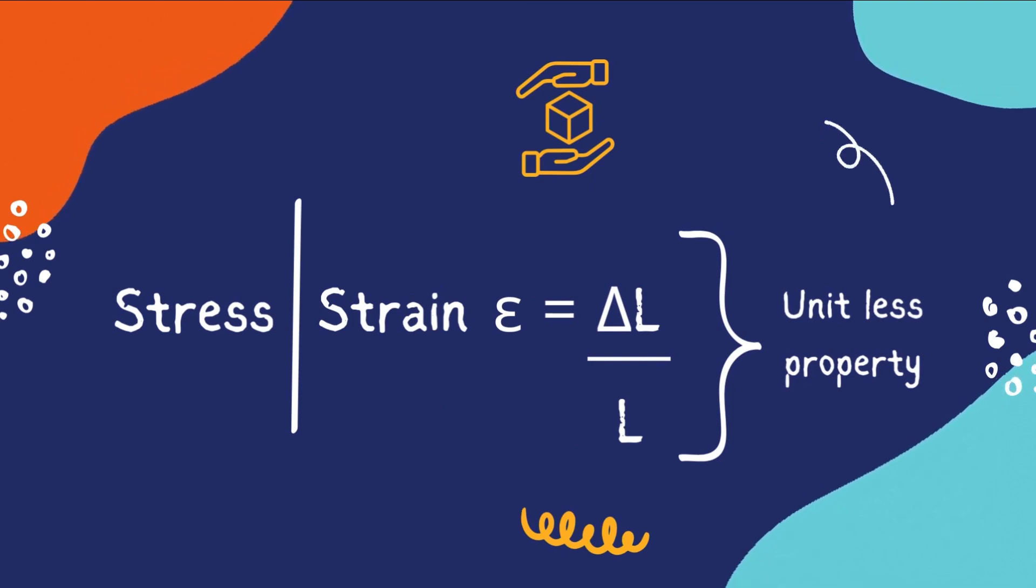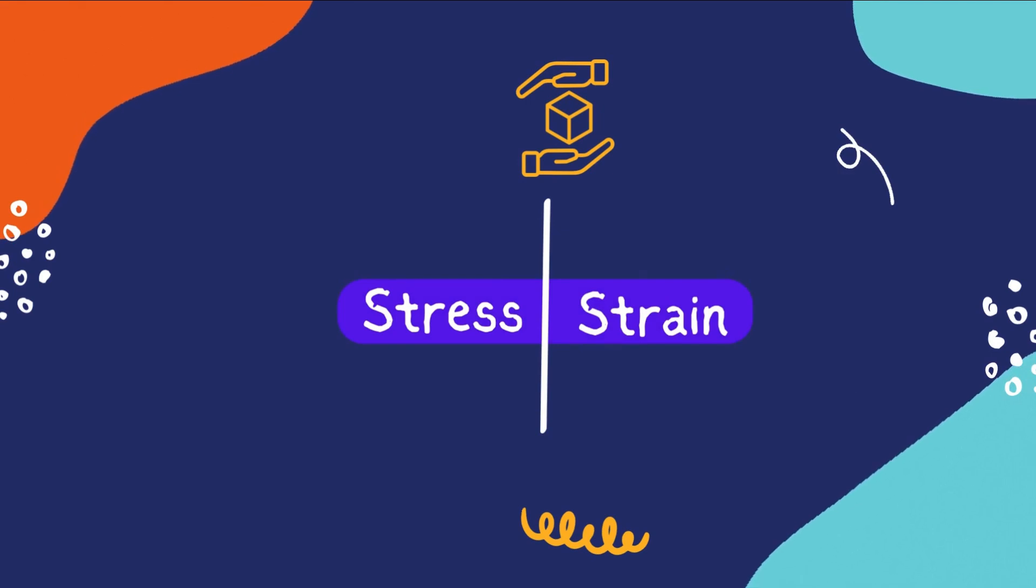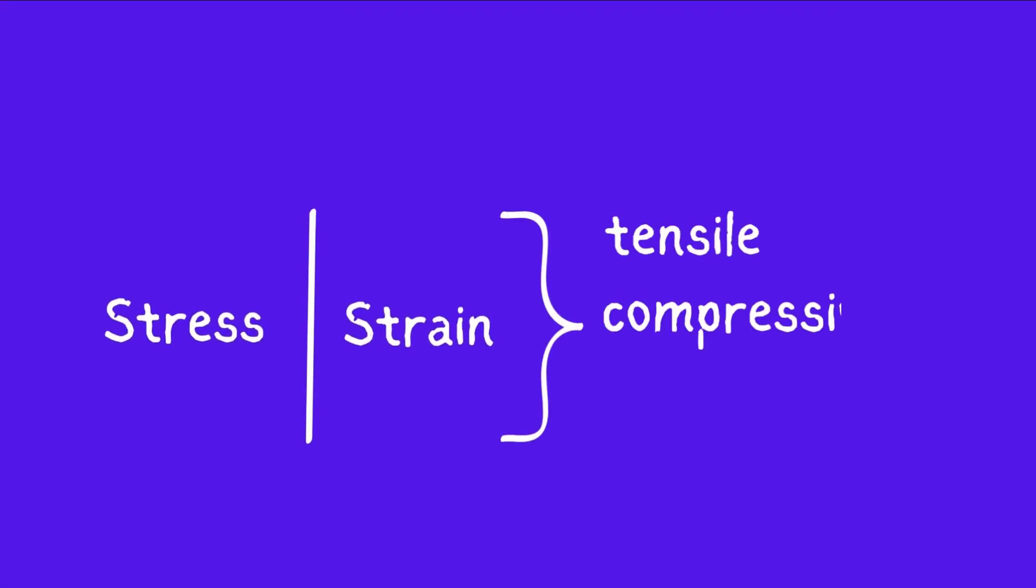This is because it just compares two same characteristics of an object. There are different types of strain like tensile strain, compressive strain, shear strain, etc. We'll discuss this in our future videos.